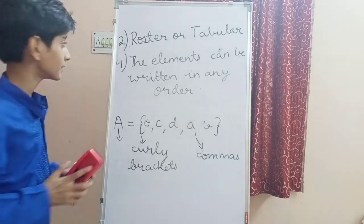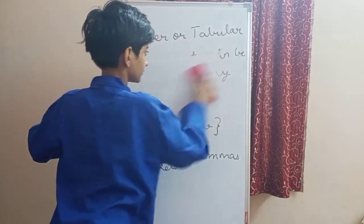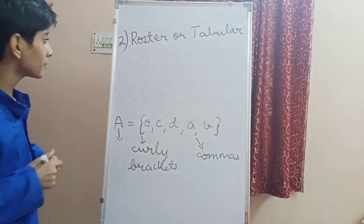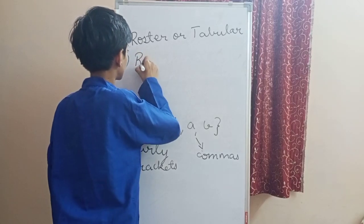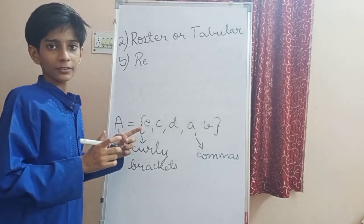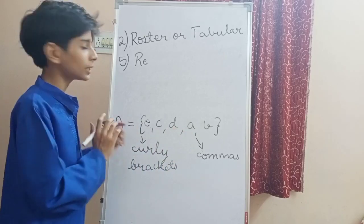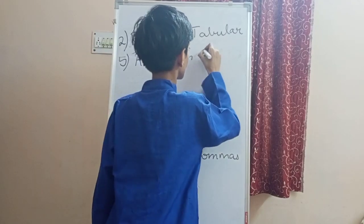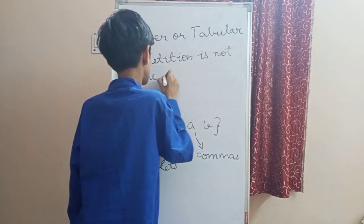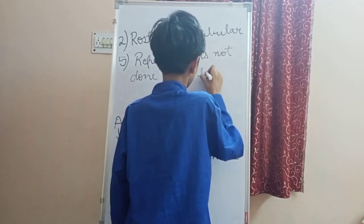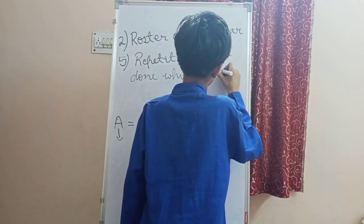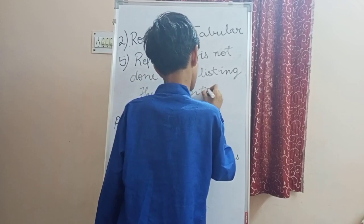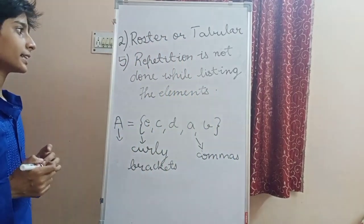The fifth and last rule is that repetition is not done while listing the elements. This means we will not repeat any letter when we are listing the elements.